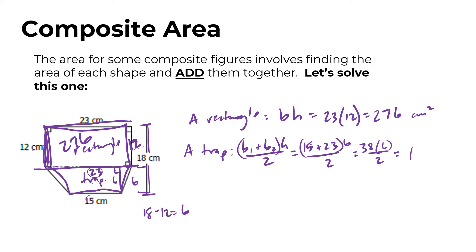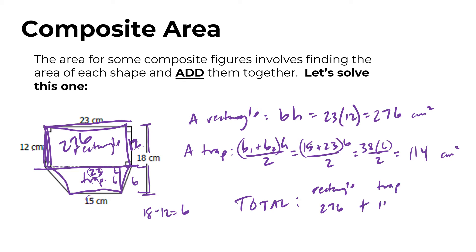Since both parts make up the hexagon, we add them together. The rectangle area is 276 and the trapezoid area is 114. The total is 390 square centimeters. That's the area of the complete shape — just separate into two parts and add them at the end.